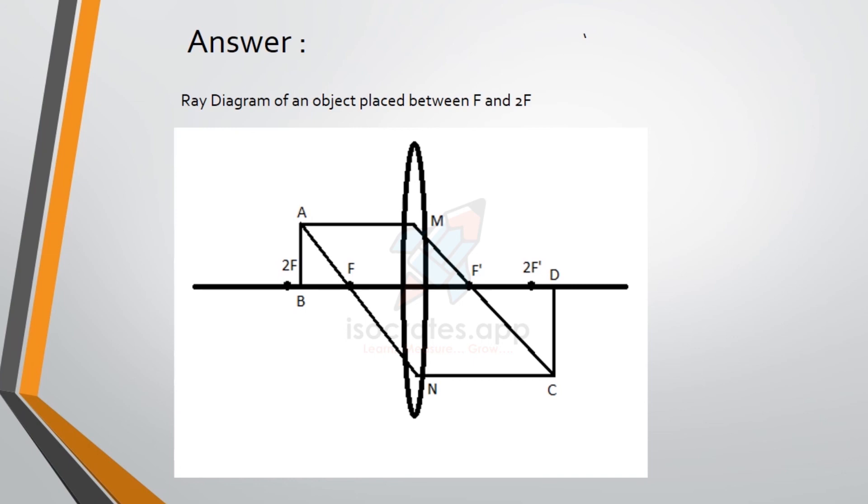Thus, this is how we draw a ray diagram of an object placed between F and 2F for a convex lens. Thank you.